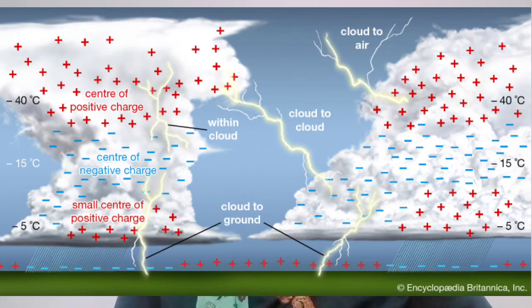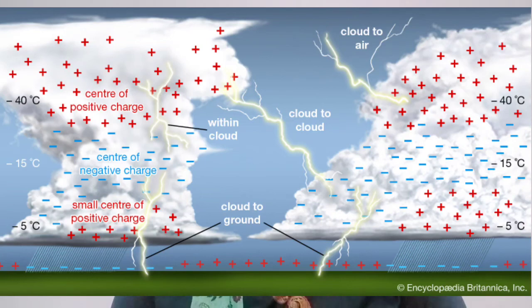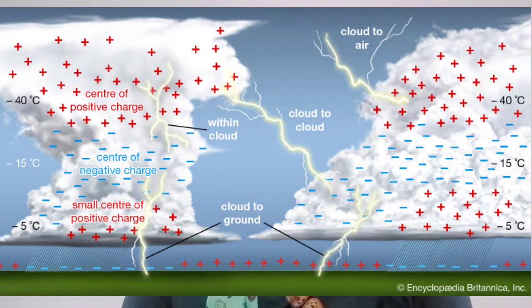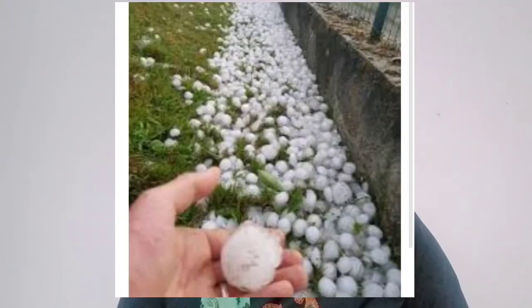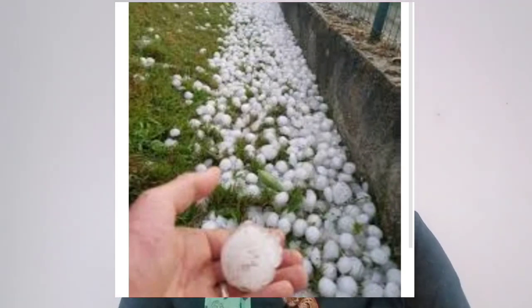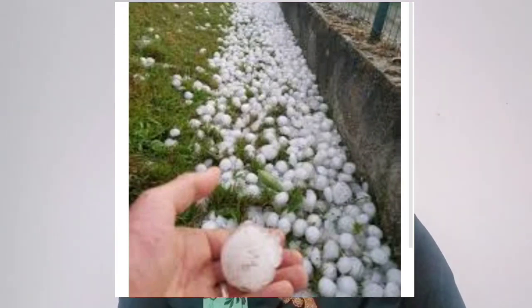The air inside a cumulonimbus cloud is very cold. Because of this very cold air, raindrops freeze — they turn into ice. These frozen raindrops fall on the ground in the form of hail or hailstones.